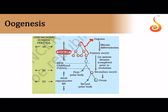Before birth, some oogonia stop dividing and mature into primary oocytes. At birth there are millions of primary oocytes. From birth to puberty, many of these primary oocytes die, and at puberty there will only be about 60,000 to 80,000 primary oocytes remaining.